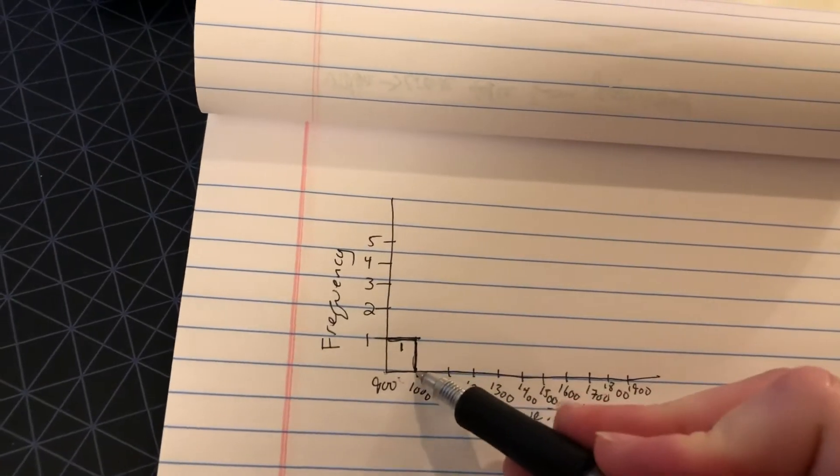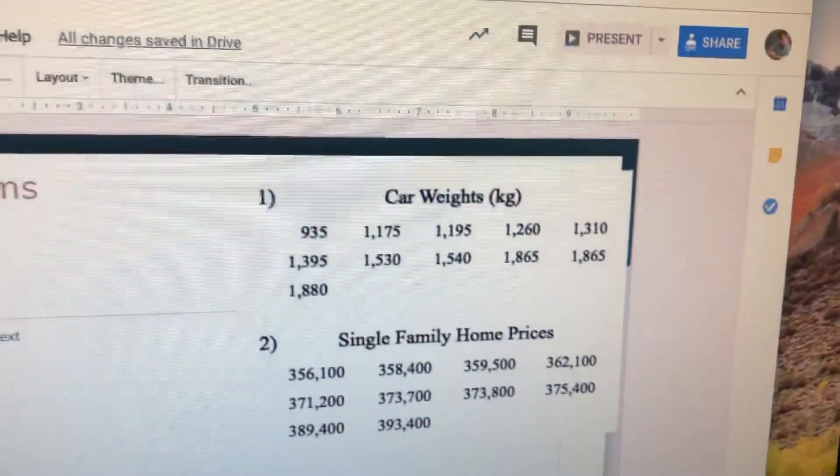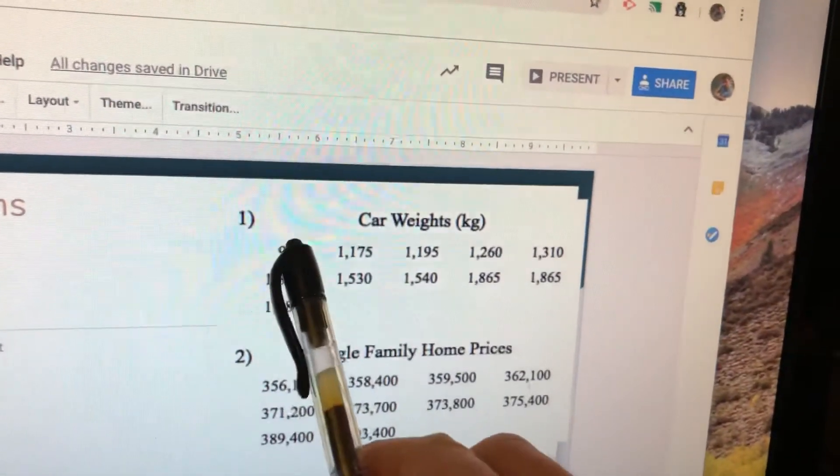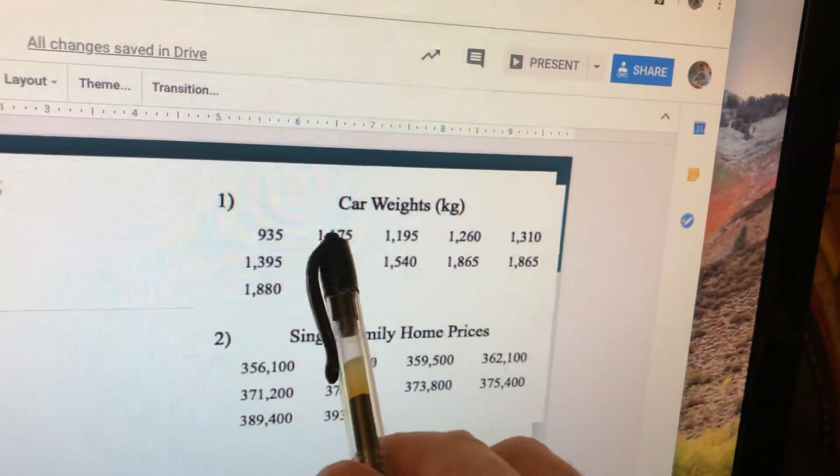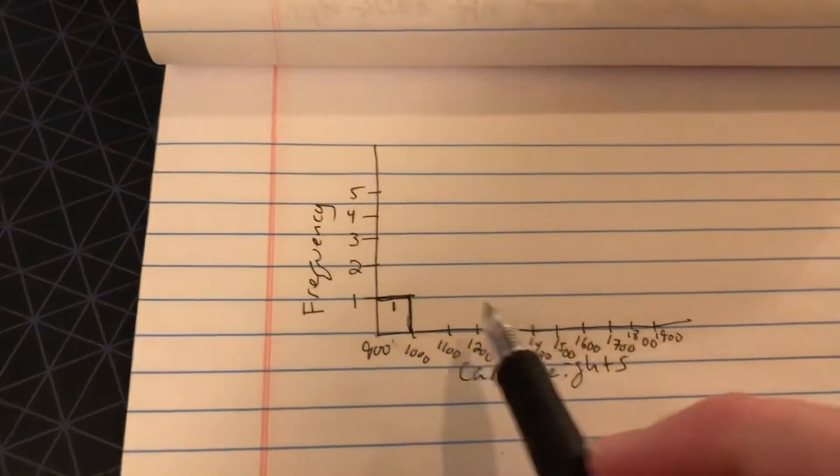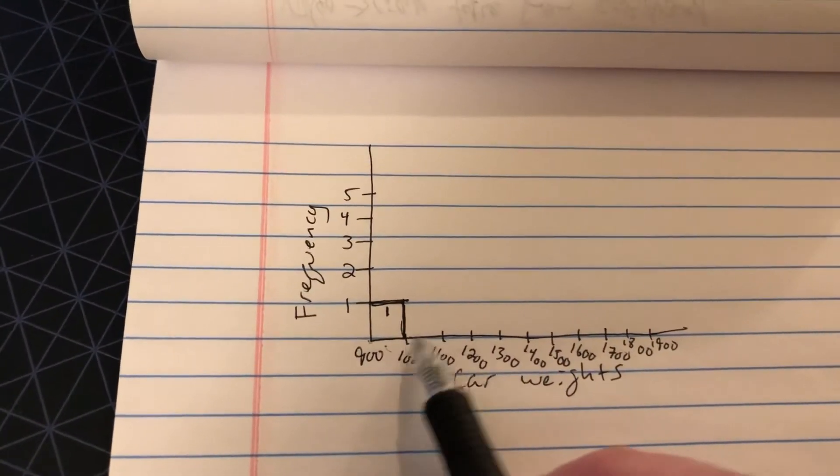My next little bin is 1,000 to 1,100. So if I look up here, I don't have any. It goes straight from 935 to above 1,100. So I will have nothing between 1,000 and 1,100.